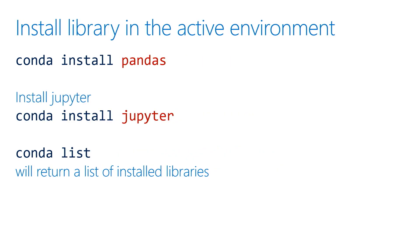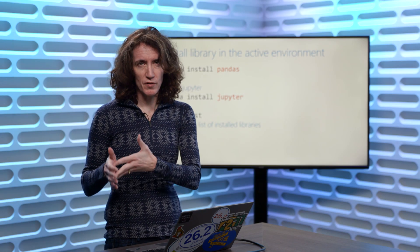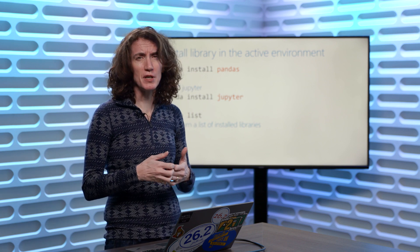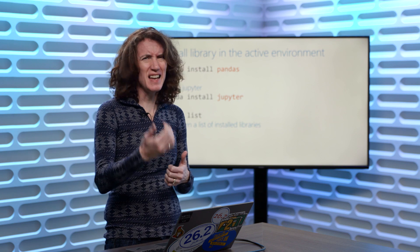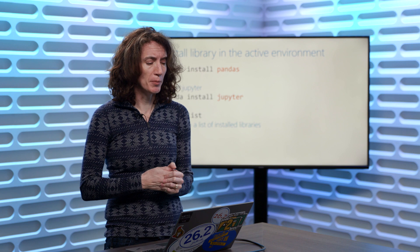Once you have created and activated an environment, you can install the libraries you're going to use inside it. You can install pandas, Matplotlib, NumPy — these are some of the libraries you'll get to know if you start exploring data science. You may need to install them, otherwise when you're running Jupyter Notebooks you're going to see error messages saying it doesn't recognize a library like Matplotlib. This is how we fix that problem.